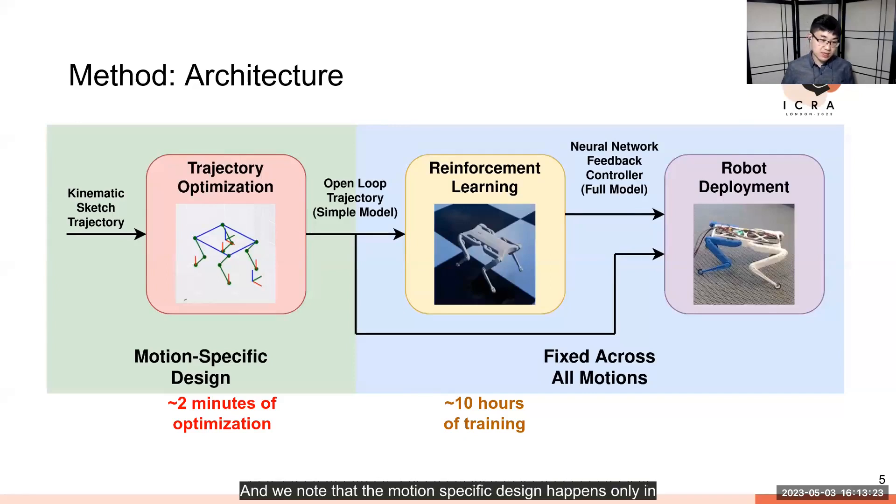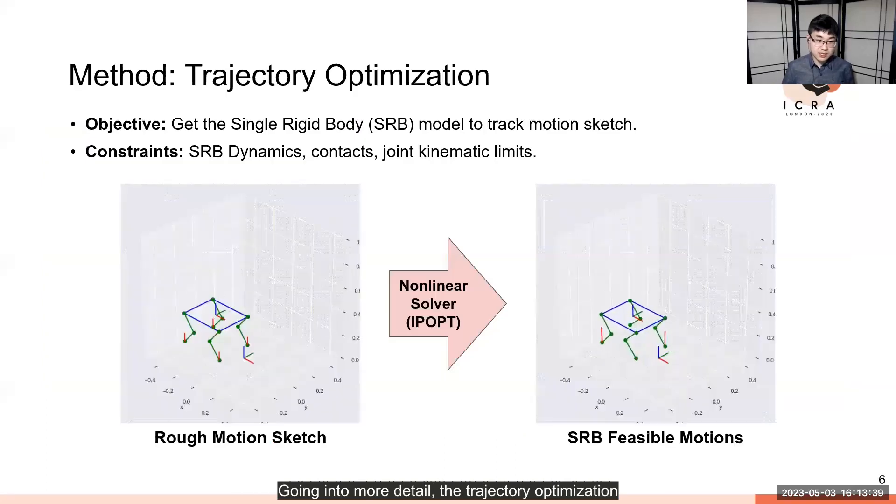We note that the motion-specific design happens only in the trajectory optimization phase, whereas the reinforcement learning, which takes orders of magnitude more computation time, is fixed across all four motions that we demonstrate.